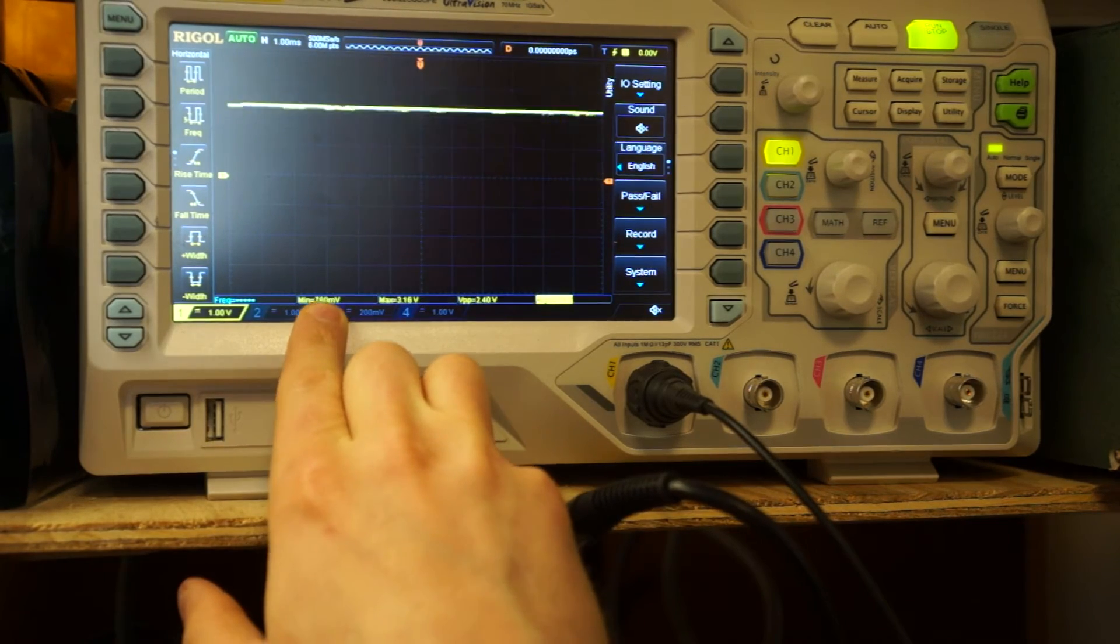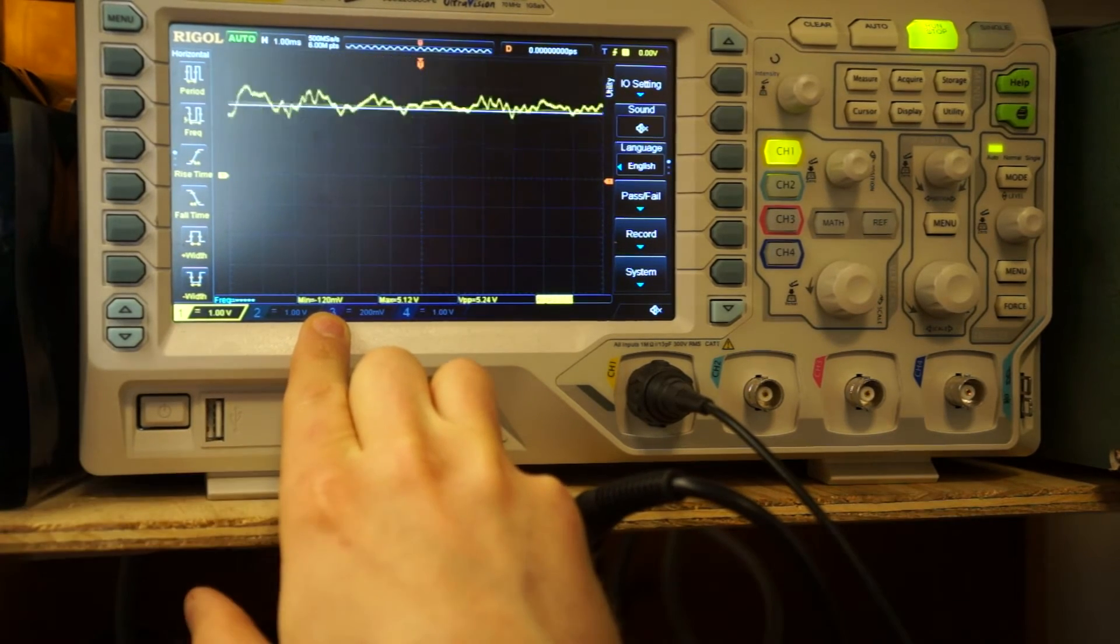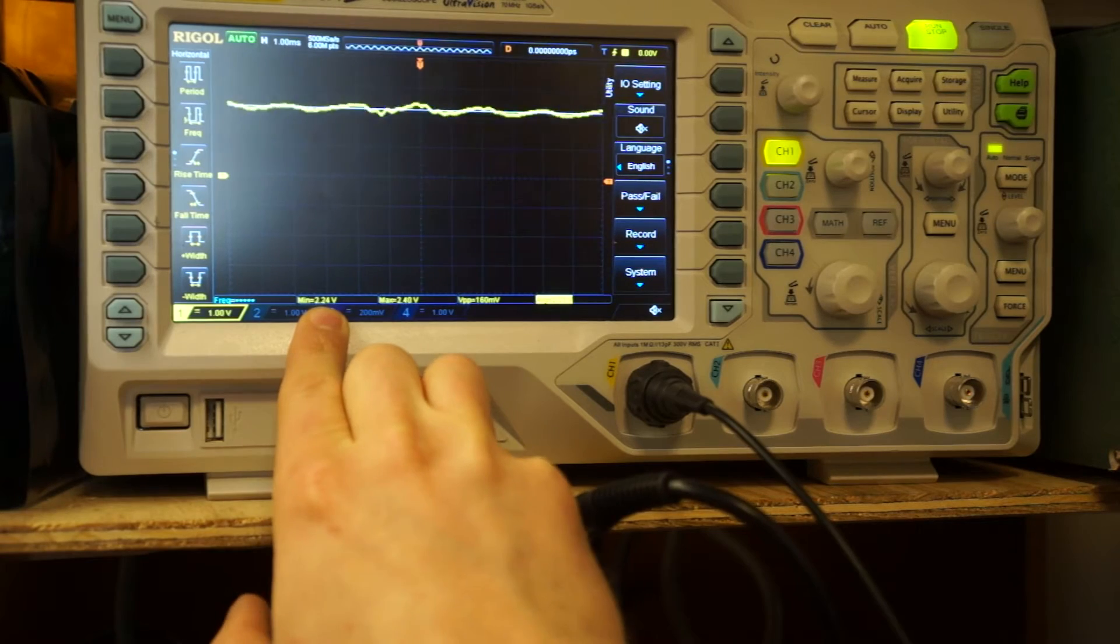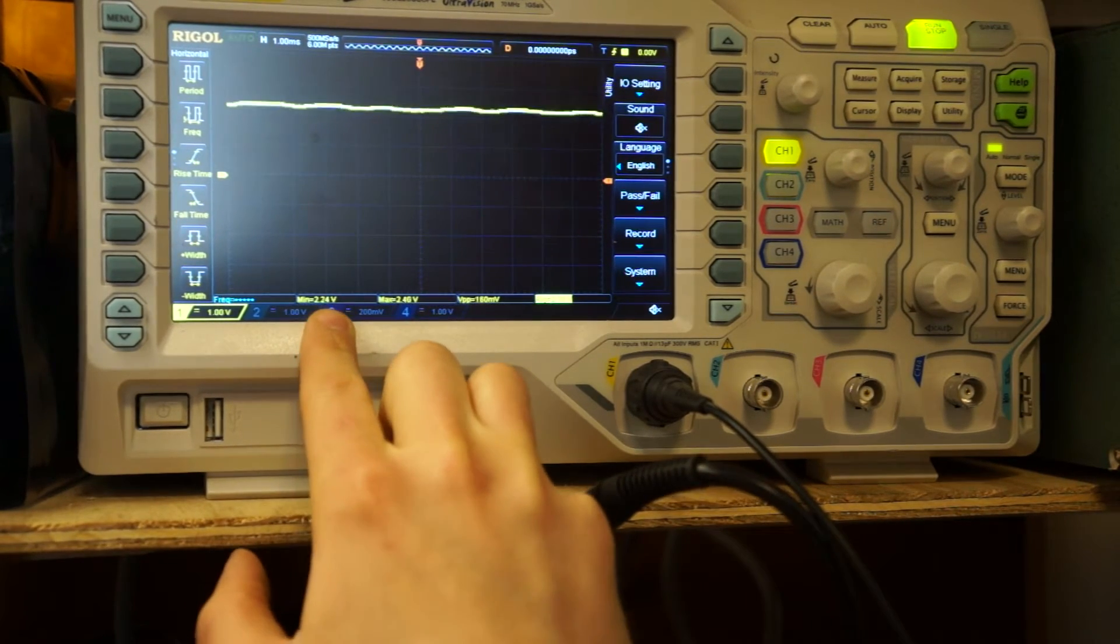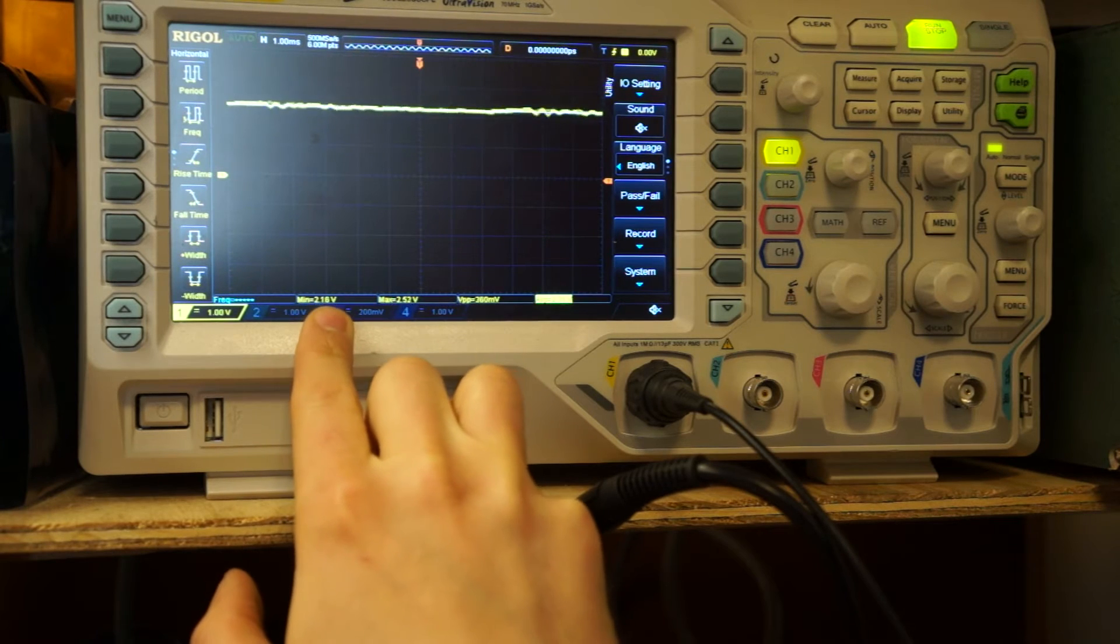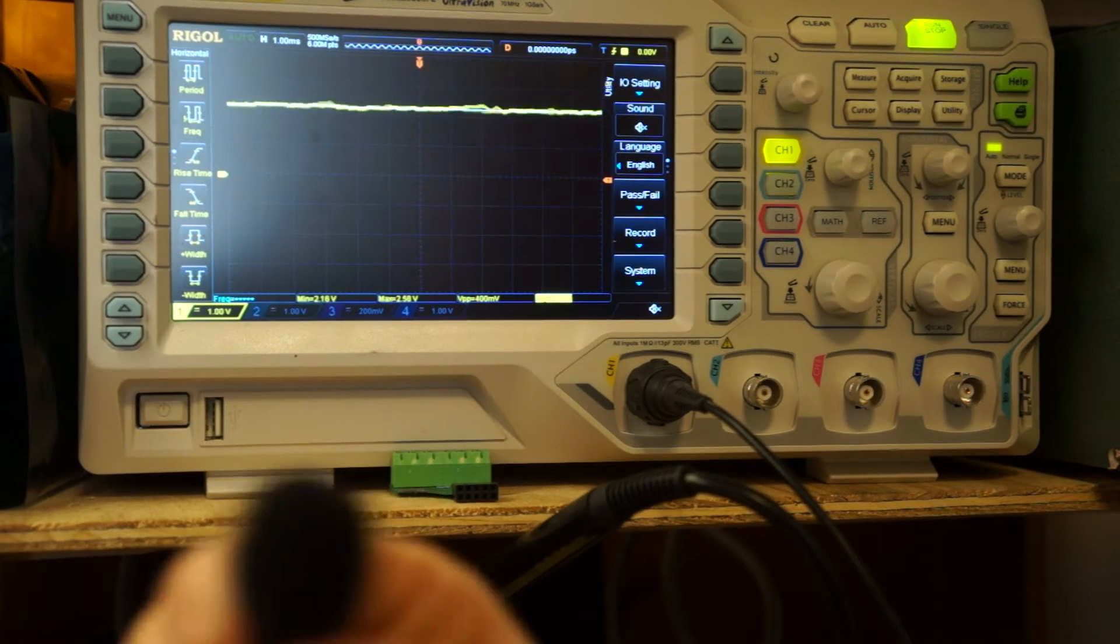So, it never really dips below a couple millivolts in the negative. Which is good, because we don't want to put negative voltage on our analog inputs. The Arduino doesn't like that.